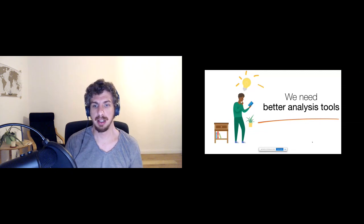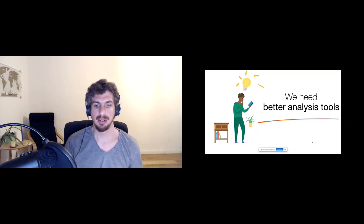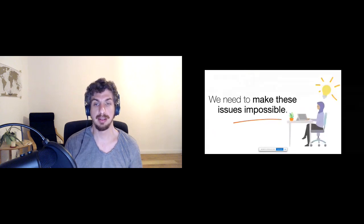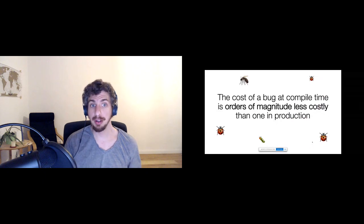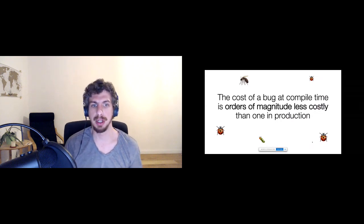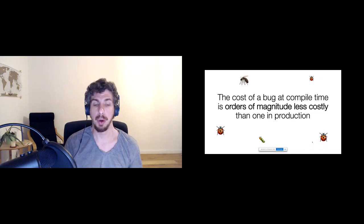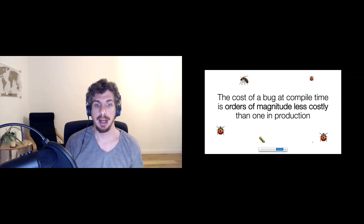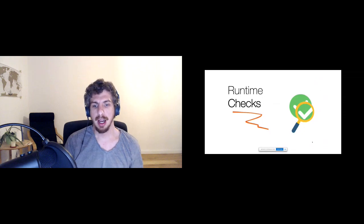Really you need something built into the language to make sure everything is caught. The last idea, and the only one we think will work, is making these issues impossible to introduce. This is the only thing that can possibly help: programmers just don't have the ability to introduce these issues in the first place. At the end of the day, the cost of a bug at compile time is orders of magnitude less costly than one in production. We want to catch things early on, because as we saw with WannaCry, it doesn't matter how quickly you find and patch it — things will still go wrong.